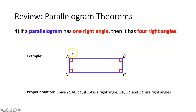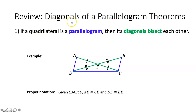The fourth parallelogram theorem says if a parallelogram has one right angle then it has four right angles. So if we know that quadrilateral ABCD is a parallelogram and one of the angles is a right angle, then all of them must be right angles.